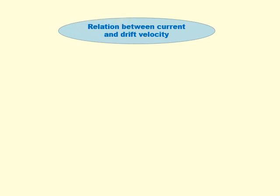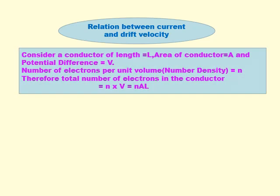Now the relation between current and drift velocity — it is a very important topic. We suppose there is a conductor of length L, area of cross-section A, potential difference V. The number of electrons per unit volume is small n, also called number density of electrons — the total number of electrons in the conductor per unit volume is n.